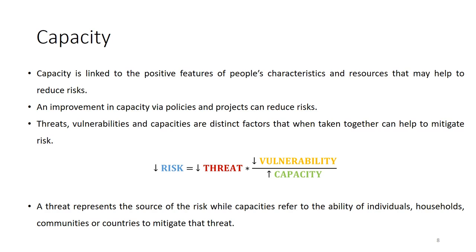Threats, vulnerabilities, and capacity are distinct components that explain risk or can be used to reduce risk. For example, if a country increases its capacity to deal with droughts, cyclones, or floods, then increasing that capacity will reduce the risk and also reduce vulnerability, and you can also reduce the threat which is there.